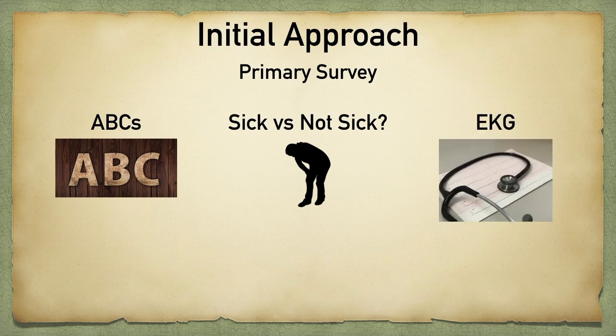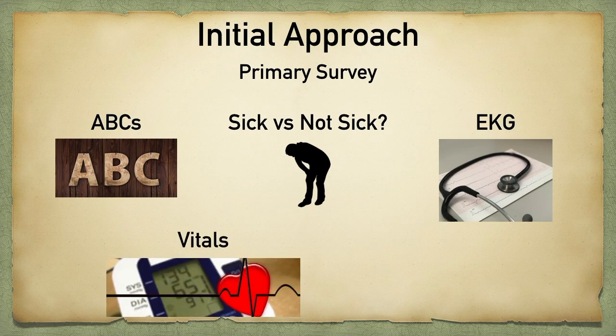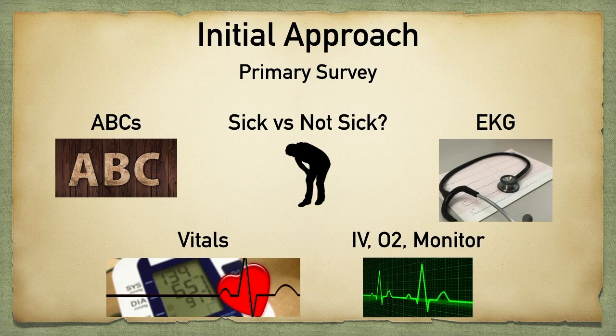The patient should get an EKG immediately on arrival. As all of this is going on, pay attention to the patient's vital signs — blood pressure, heart rate, respiratory rate, temperature, and oxygen saturation. The patient will also need to be hooked up to a cardiac monitor and pulse oximetry, and an IV should be established. All of these things are going on concurrently. What's important is that you perform an adequate primary survey on any new patient, especially one with shortness of breath.